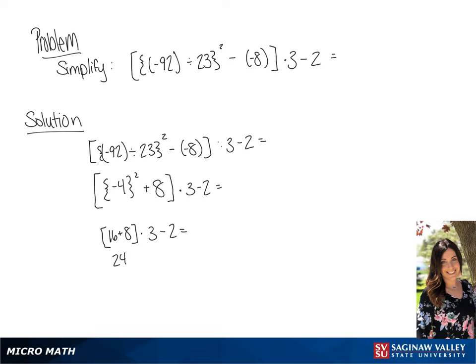So 16 plus 8 is 24, so we have 24 times 3 minus 2. 24 times 3 is 72, giving us 72 minus 2, and we have a final answer of 70.